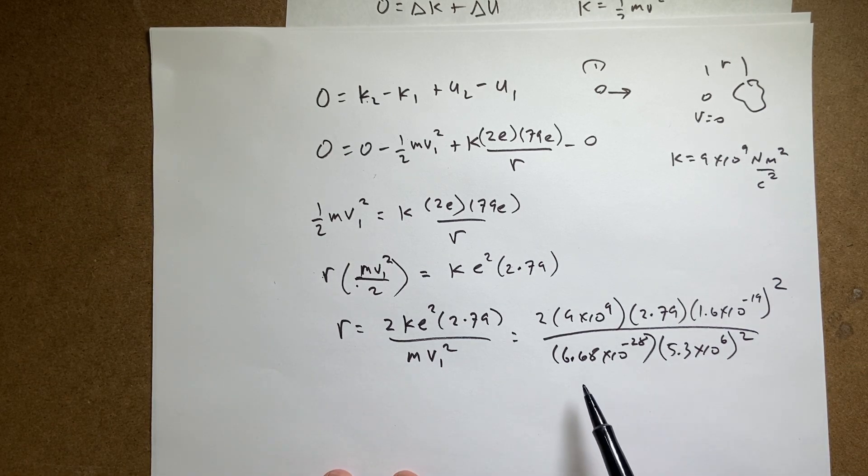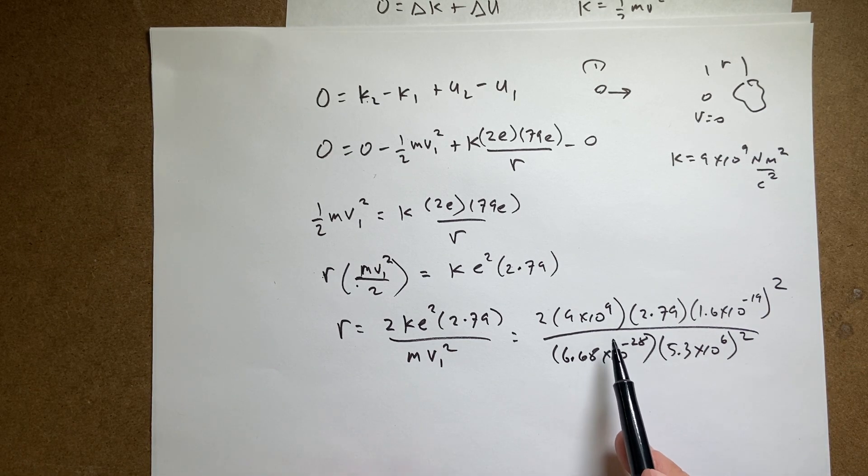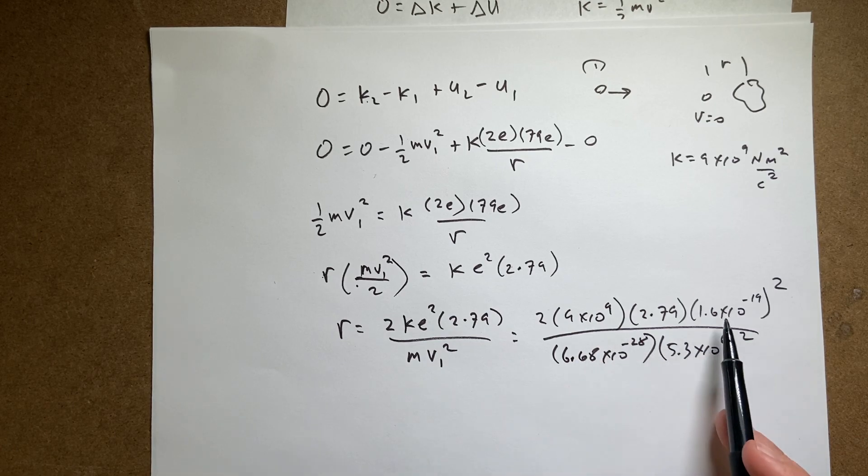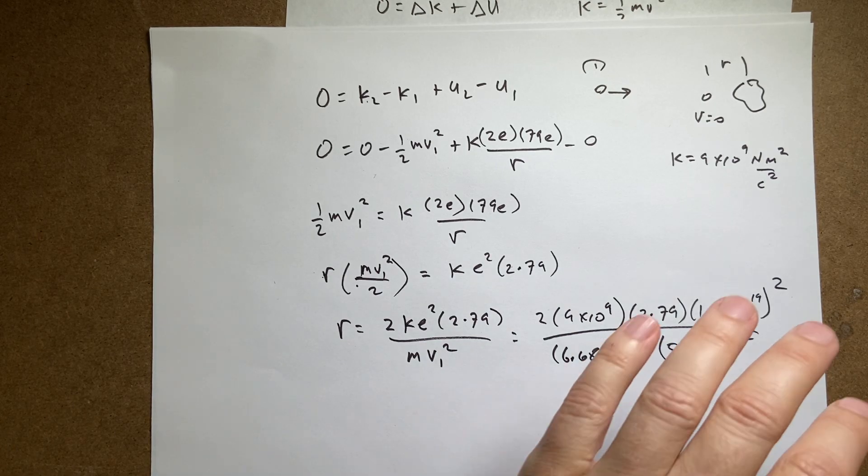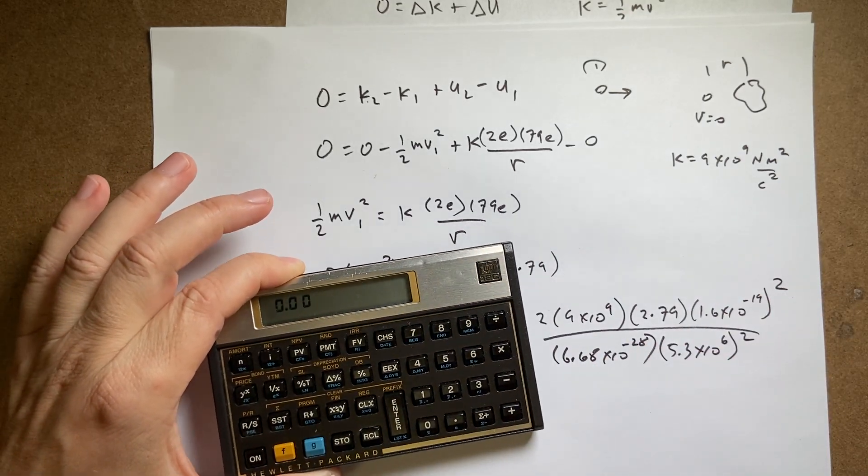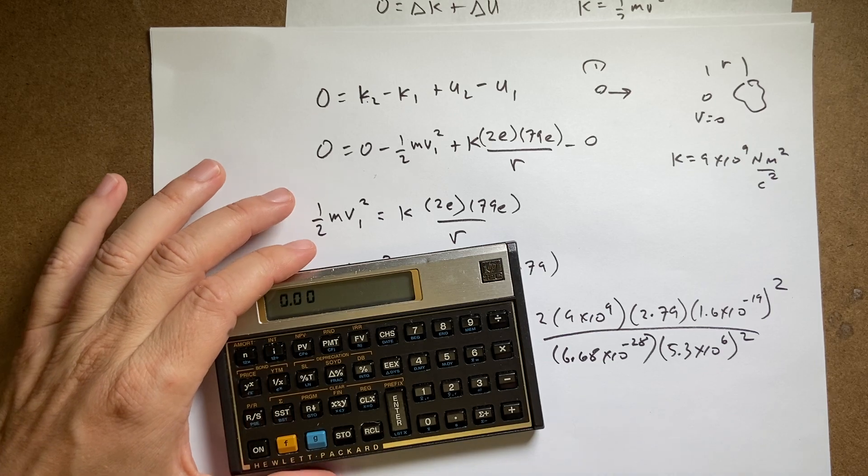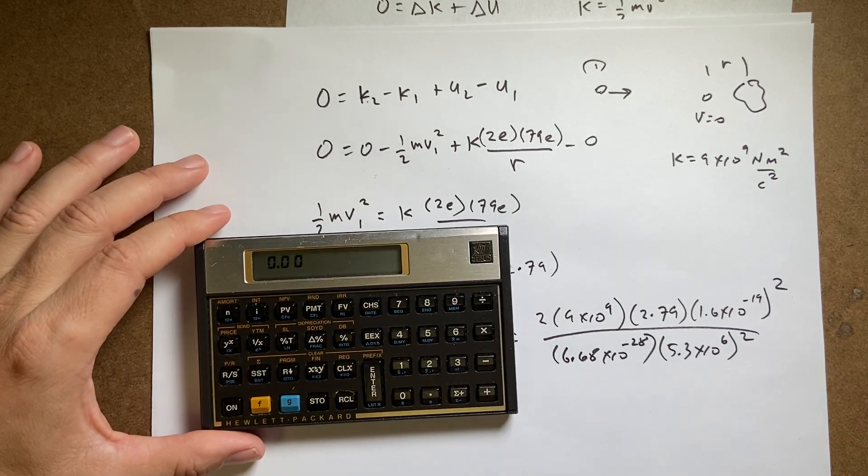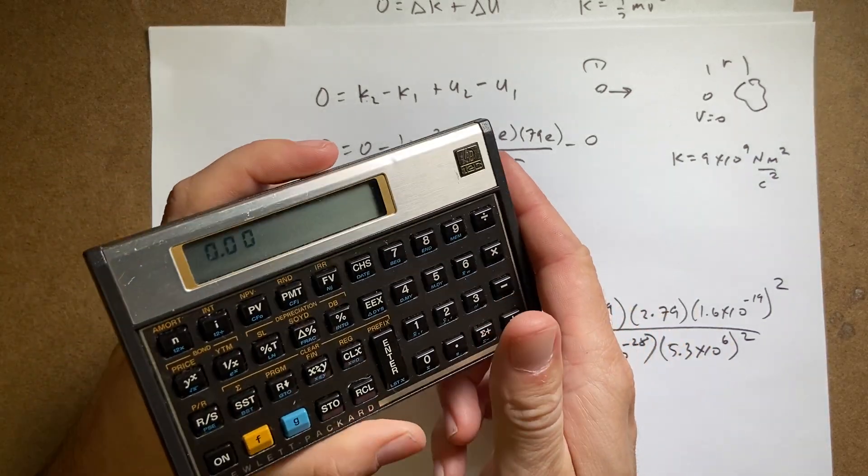Okay. This is going to be tricky to enter. You have scientific notation, you have stuff that's squared. So just be very careful. If you're not skilled with your calculator here, take your time. Write down each individual step. Don't try to do it all at once, which is what I'm going to do right now.